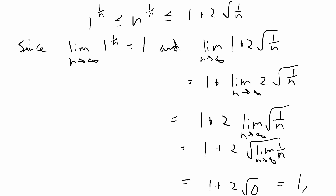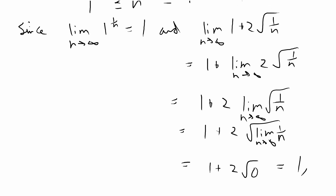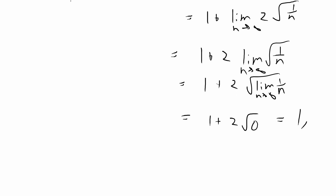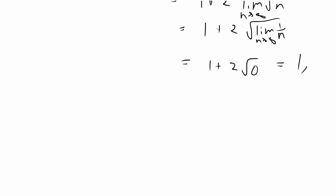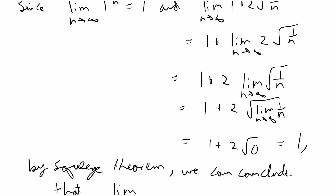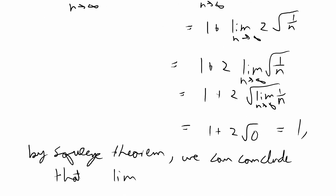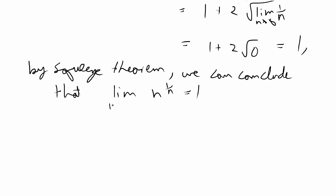Since the limit of 1 to the 1 over n equals 1 and the limit of 1 plus 2 times the square root of 1 over n also equals 1, by the squeeze theorem we can conclude that the limit of the middle part — which is what we were looking for — n to the 1 over n as n goes to infinity, is equal to 1. And we're done with this proof.